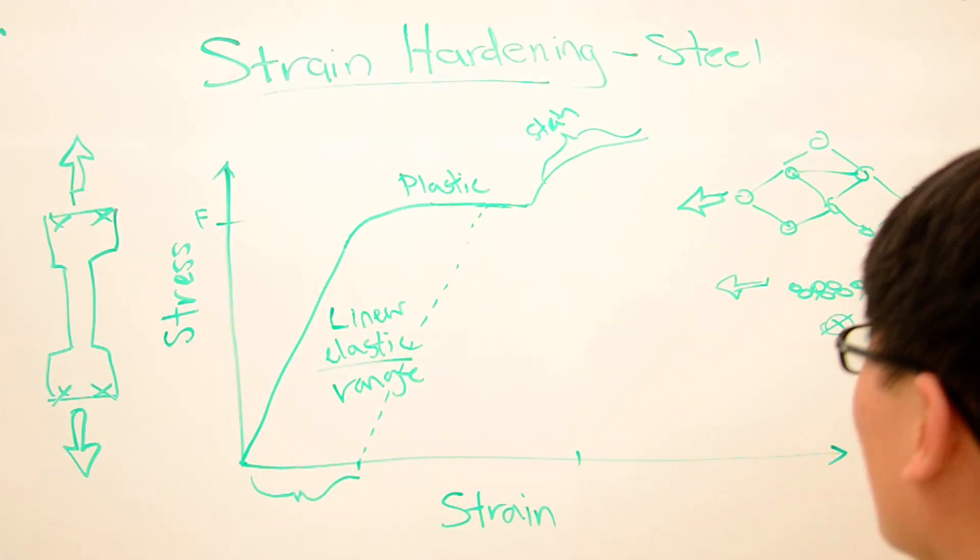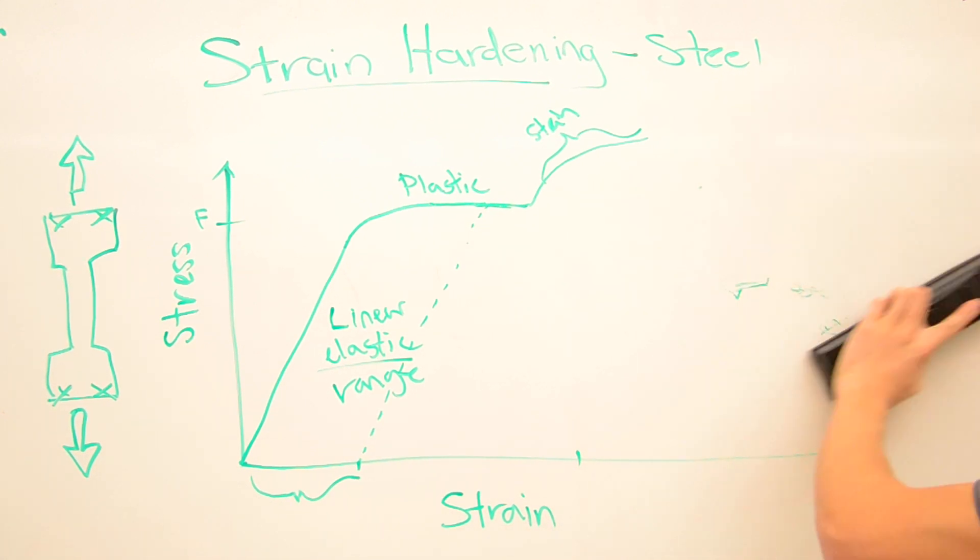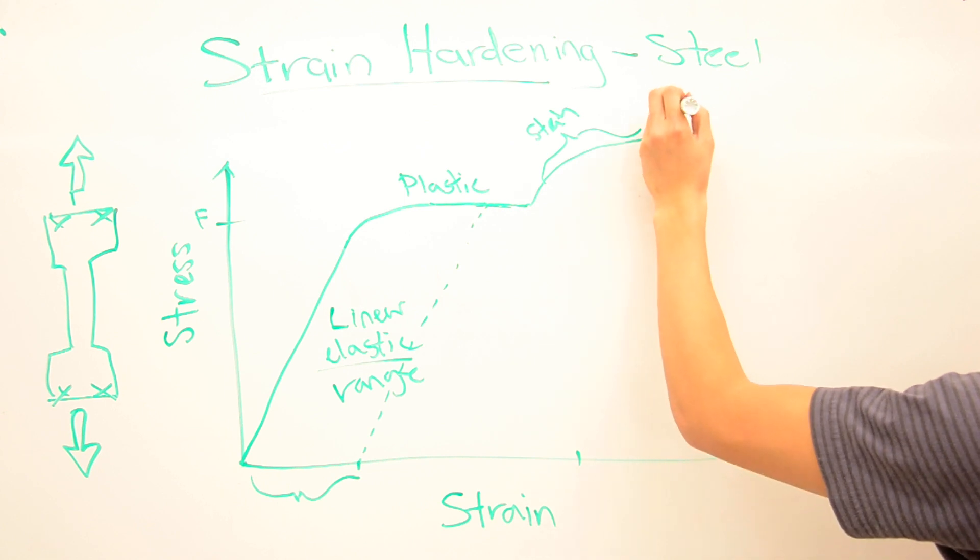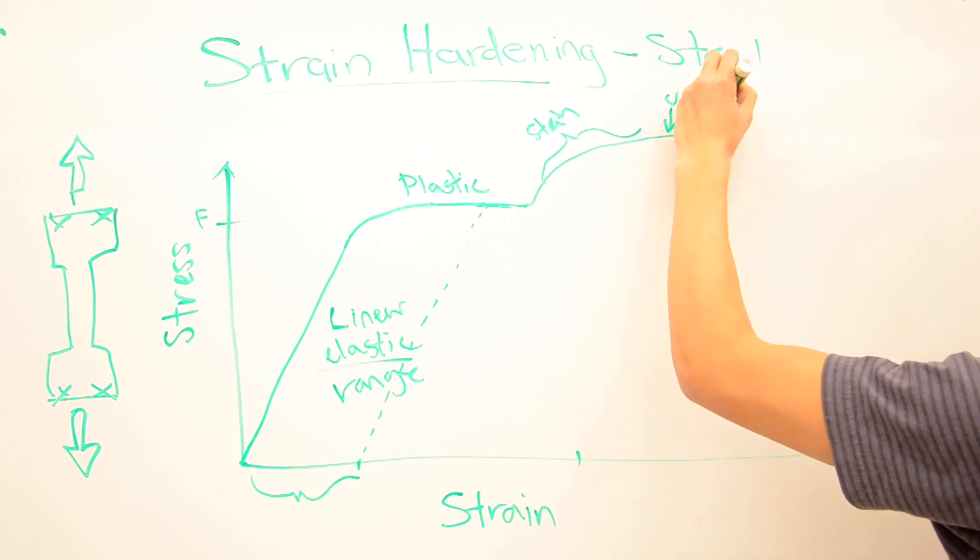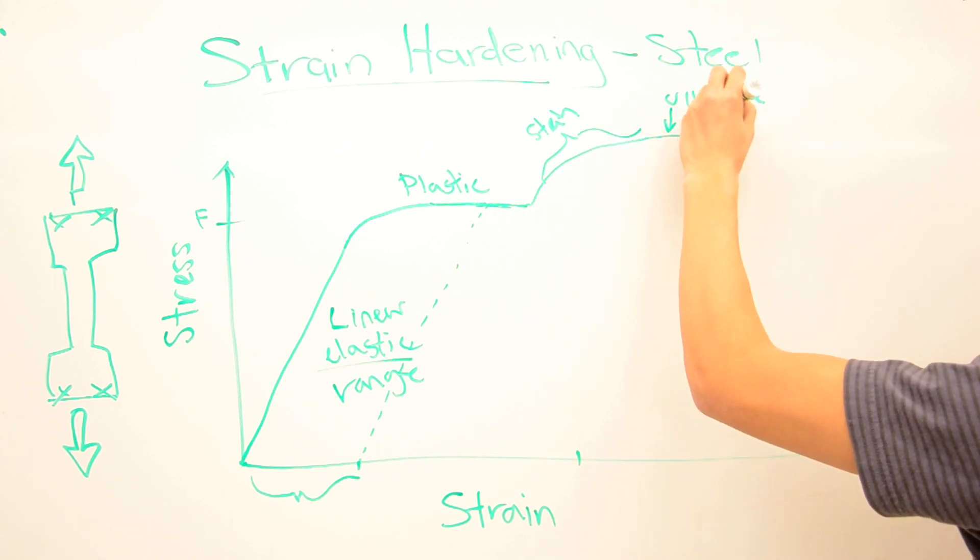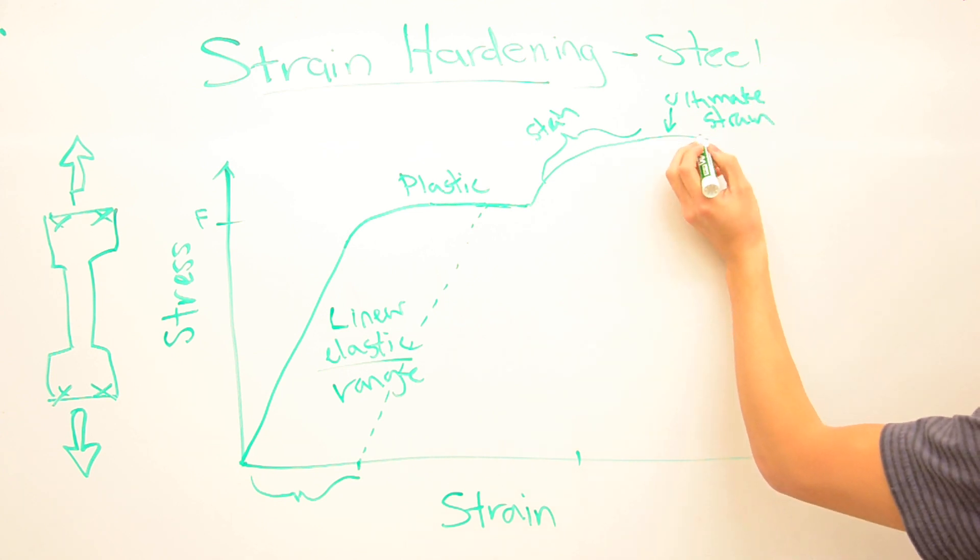And it goes up and up, a little bit more, until you reach the ultimate stress. And after here, then it starts to behave like you would expect. It starts to fail. This is called necking.